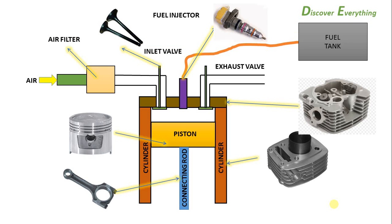The components of the 4-stroke diesel engine are: cylinder head, cylinder block, connecting rod, piston, air filter, inlet and exhaust valve, inlet port, and exhaust port. These are the 4-stroke diesel engine components.